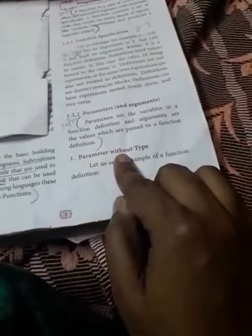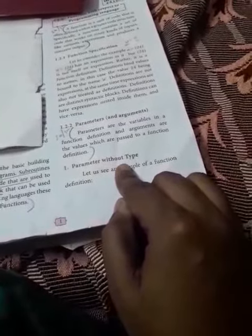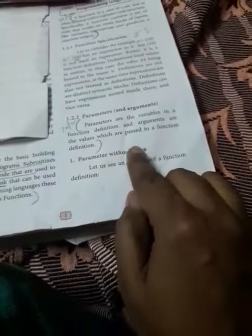Next, the function having the parameter can be defined in two ways: Parameter without type, and Parameter with type. Let us see an example of a function definition.